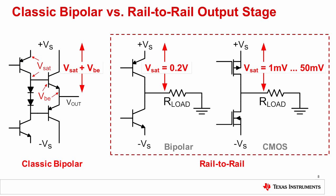The classic bipolar output stage is usually limited to a volt or more away from the supply rail due to the VBE and VSAT of the output transistors, and it uses a common emitter configuration. The rail-to-rail output stage, on the other hand, can swing very close to the supply rail. For a bipolar rail-to-rail output stage, the swing limitation comes from VCE saturation voltage, which is about 0.2 volts for most transistors. The CMOS rail-to-rail output stage can swing much closer to the rail, with VSAT typically from 1 to 50 millivolts. The actual VSAT of the CMOS stage depends on output transistor sizing — very low VSAT can be achieved with large transistors, but large transistors use more die area, cost more, and have larger parasitic capacitance, so there are trade-offs.